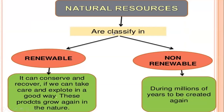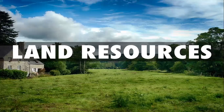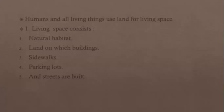Natural resources are divided into two types: renewable and non-renewable. Renewable means it can be conserved and recovered again quickly. If we take care and exploit them in a good way, these resources grow again in nature quickly — such as wind and energy from the sun. Non-renewable materials take millions of years to be created again. When these materials end, we cannot recreate them, such as fossil fuels and petroleum. All of these are non-renewable natural resources.